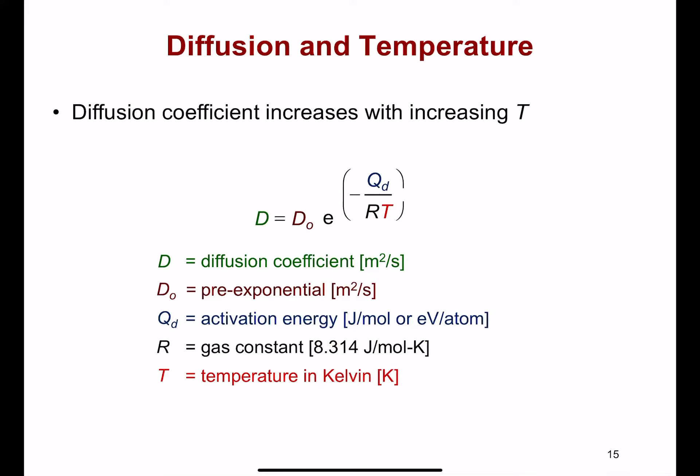Now, diffusion and temperature. We saw that the diffusion coefficient is something very specific to the conditions of the experiment, the type of chemical, the type of membrane. You might expect that things like the environment or temperature might influence the value of the diffusion coefficient — and yes, it does.